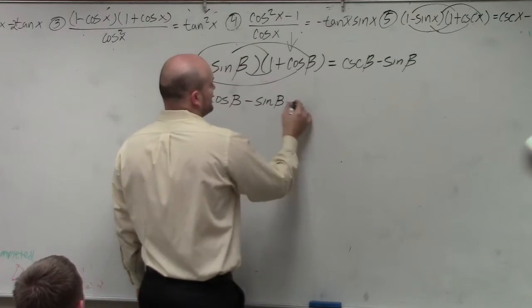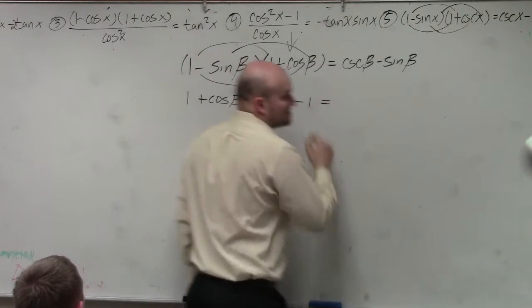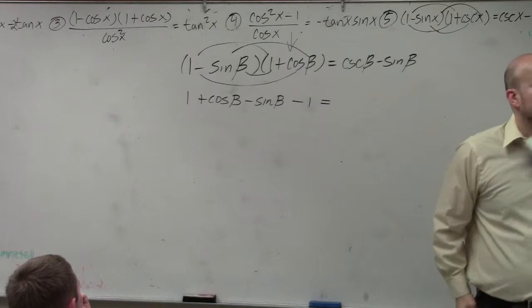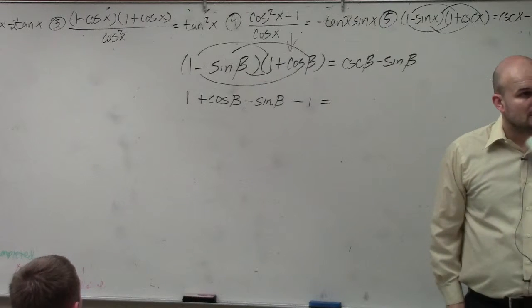Negative sine of beta times cosecant of beta is negative 1. Does everybody agree with me that sine times cosecant is 1? No. OK, what's the problem?